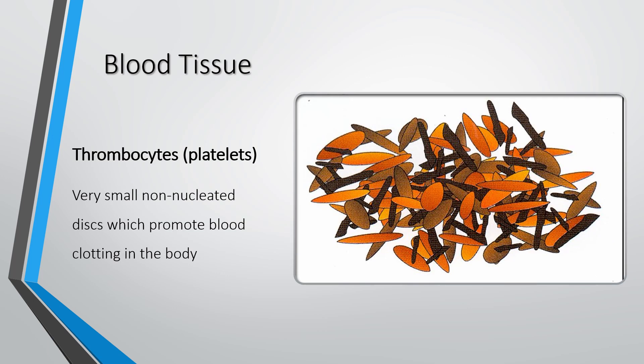The third type of blood cell is the thrombocytes, also called platelets. These are very irregular cells, a bit like gravel — very small, non-nucleated discs which promote the clotting of blood in the body.